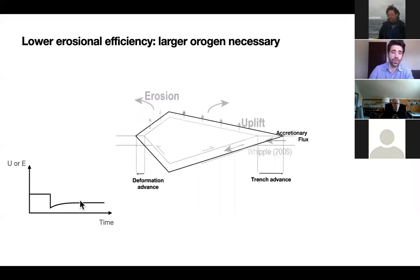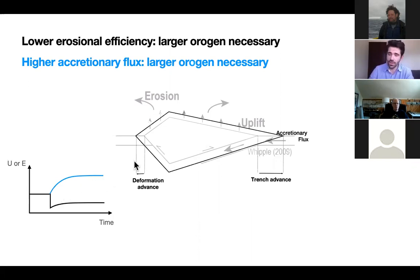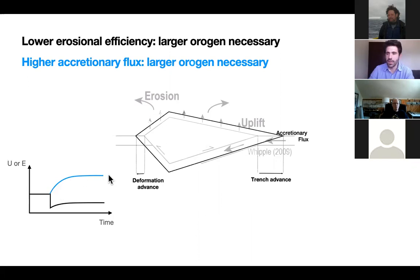We can also grow the orogen wider by increasing the accretionary flux and maintaining erosional efficiency fixed. So for fixed erosional efficiency, if we increase the mass flux into the orogen, we should expect it to grow outwards, get taller, get thicker, get wider. And so this would predict an increase in erosion rate and uplift.